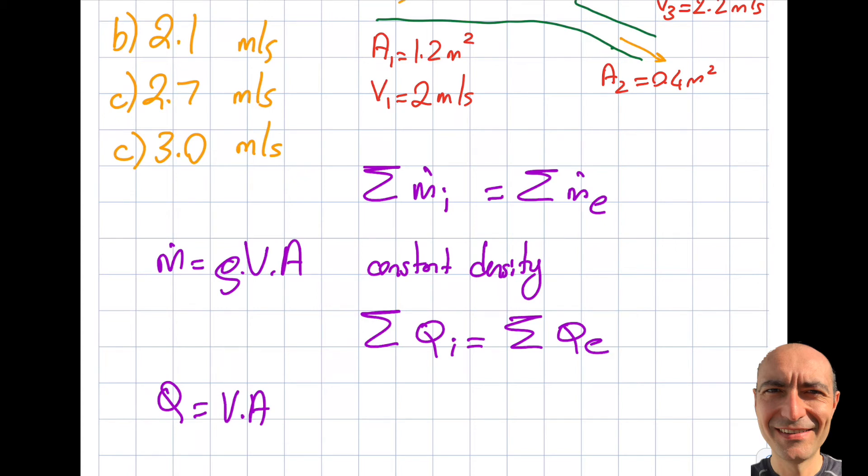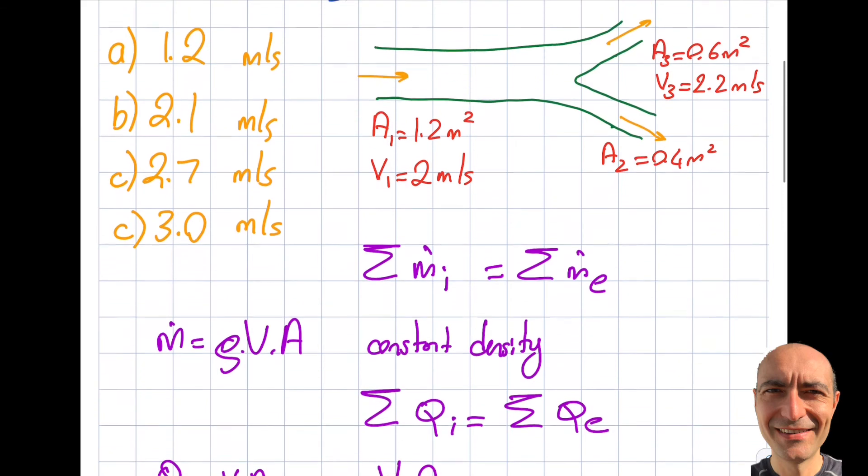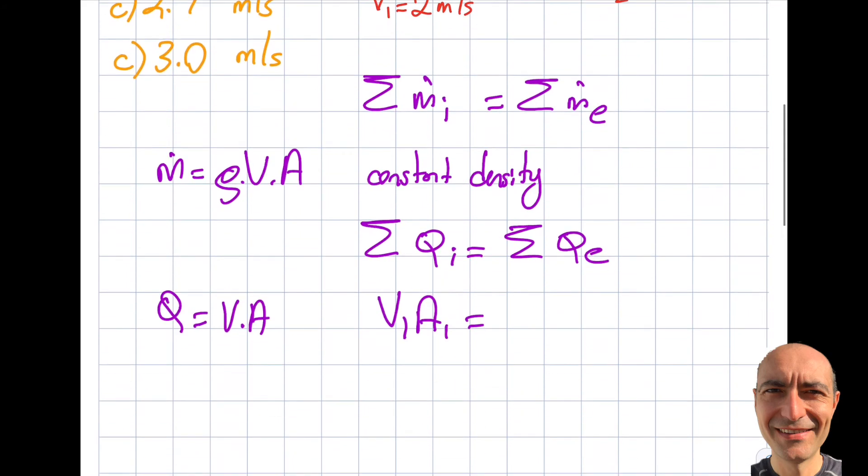I only have one inlet, so it's going to be V1A1. And the exits, there are two of them. You can see over here, one branch, one branch. Two of them. So I'm going to have V2A2 plus V3A3.